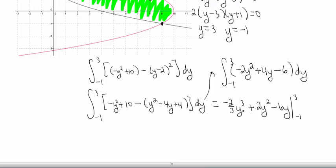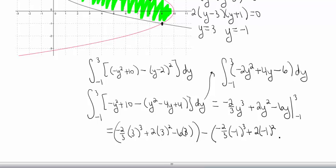Let's throw in 3, throw in negative 1. And when we throw in that negative 1, you definitely want to make sure to have parentheses in there. So we've got negative two-thirds times 3 cubed plus 2 times 3 squared minus 6 times 3, that whole number, minus negative two-thirds times negative 1 cubed plus 2 times negative 1 squared minus 6 times negative 1. That's a number, and then when you combine these two numbers together, hopefully my math is correct here, you end up with 64 over 3. Fabulous. Thank you for watching.